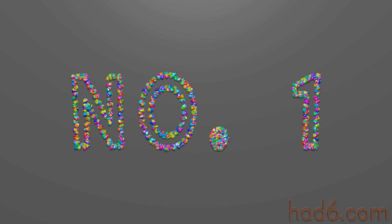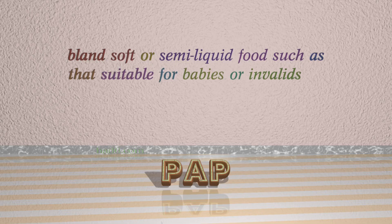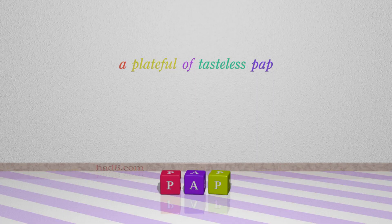Number 1: PAP. Which means bland, soft or semi-liquid food such as that suitable for babies or invalids. For example: a plate full of tasteless pap.